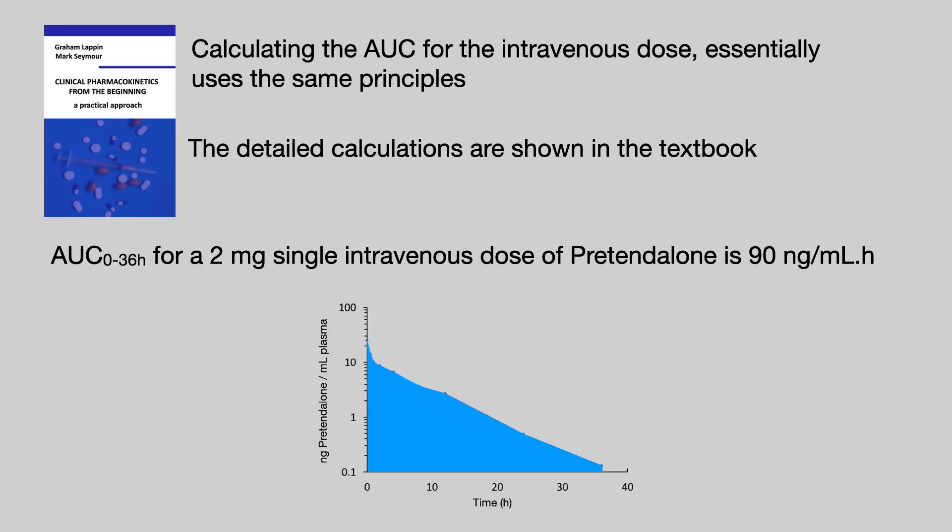To calculate the area under the curve for the intravenous dose is essentially the same as for the oral dose. The detailed calculations are shown in the textbook. The AUC between 0 and 36 hours for a 2mg single intravenous dose of Pretendalone is 90 nanograms per ml times hours.